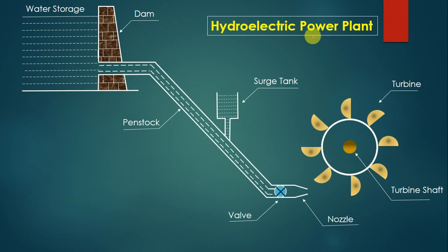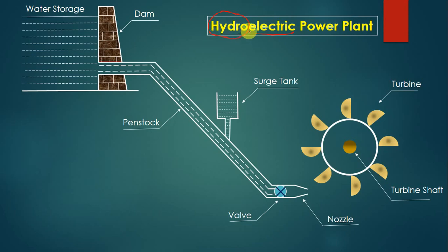Power plants are used for generation of electricity, so the main objective of this arrangement is to generate electricity. The name 'hydroelectric' is formed by two words: 'hydro' and 'electric'. The word hydro is taken from hydraulic, and electric from electrical energy. So in this power plant, hydraulic energy is converted into electrical energy. Hydraulic energy is the energy stored in water, while electrical energy is the flow of electrons.